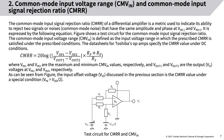Section 2: Common mode input voltage range CMV and common mode input signal rejection ratio CMRR. The CMRR of a differential amplifier is a metric used to indicate its ability to reject two signals — common mode noise — that have the same amplitude and phase at VIN− and VIN+. It is expressed by the following equation. The figure shows a test circuit for the CMRR.